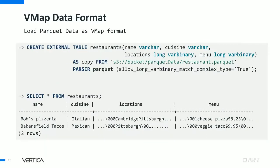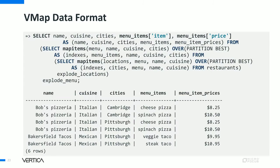As mentioned, if you go back to the previous slide, the locations and menu items are still in the varbinary or VMAP format. The question is: if you want better performance on VMAP data, for primitive types you could materialize into the primitive type. However, if it's an array or array of row, you'll need first-class complex type constructs — and that is what has been added in Vertica.